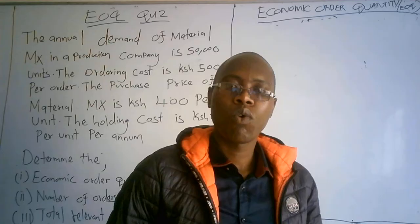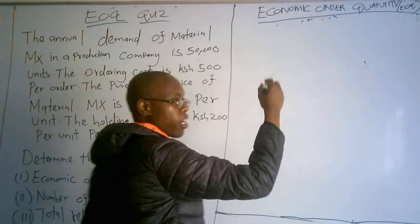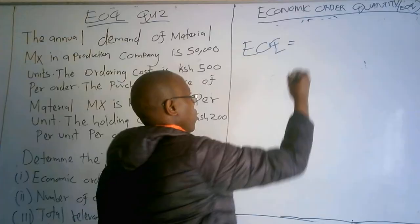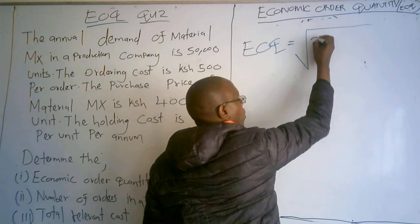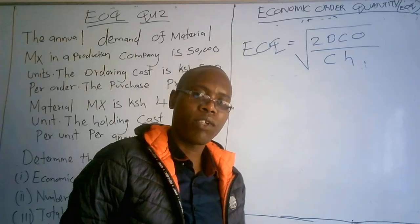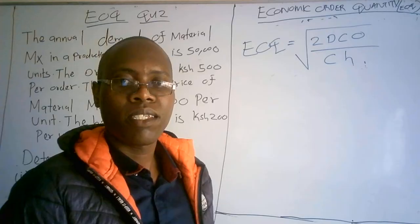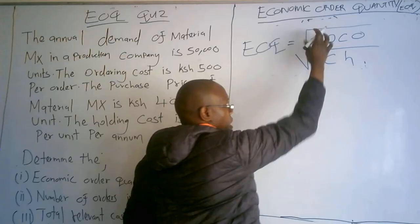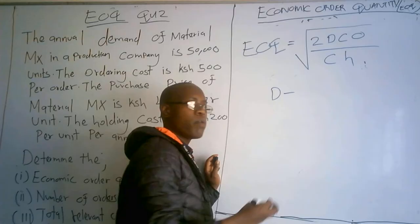Under economic order quantity, these are the formulas you need to understand. The first formula is the EOQ itself. The economic order quantity is given by the square root of 2DCO divided by CH. The constant 2 will always be there. D is the annual demand.